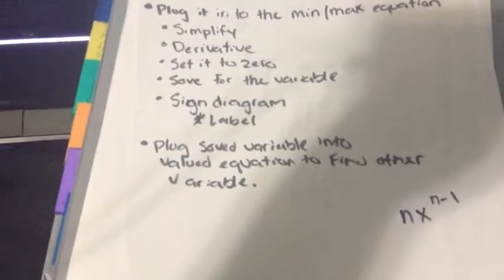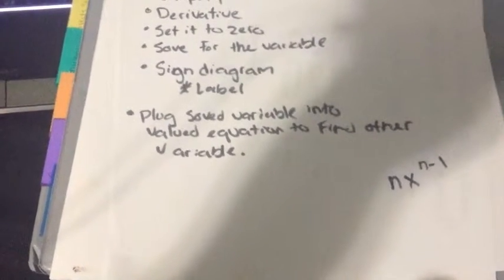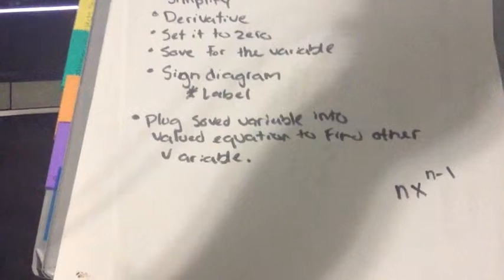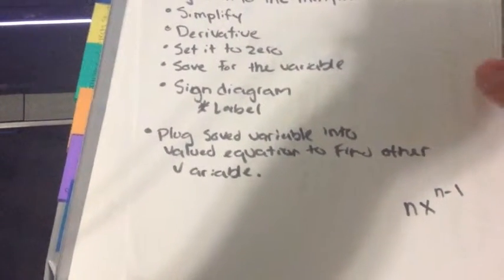Use a sign diagram to check. And then plug it back into the original, into a valued equation to find your other value. And so it's that simple. So let's get started.